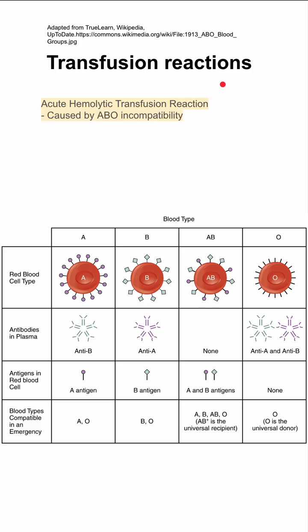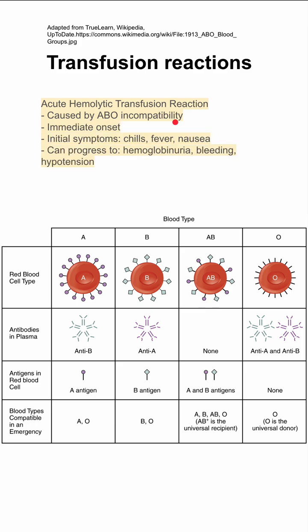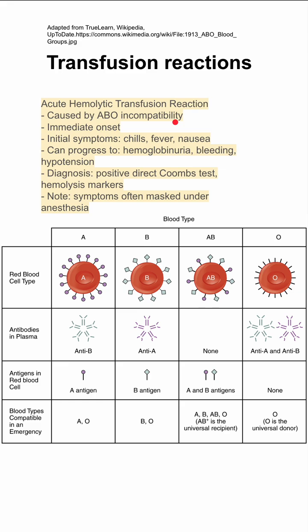The first is acute hemolytic transfusion reaction. This is caused by ABO incompatibility. It has immediate onset, and the initial symptoms are fever, chills, and nausea. It can progress to hemoglobinuria, bleeding, and hypotension. The diagnosis is made with a positive direct Coombs test and hemolysis markers, and symptoms can be masked under anesthesia if you're doing a transfusion during a surgery, for instance.